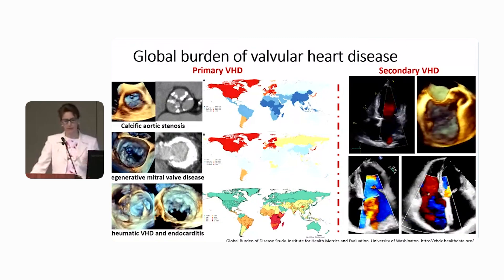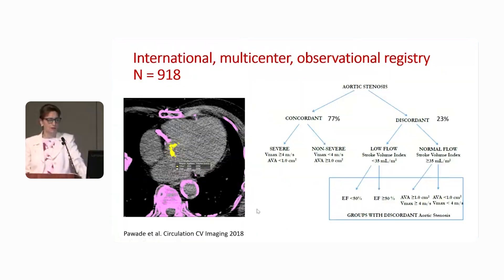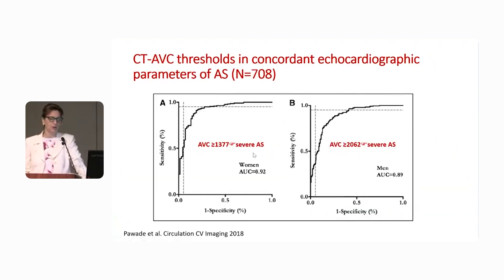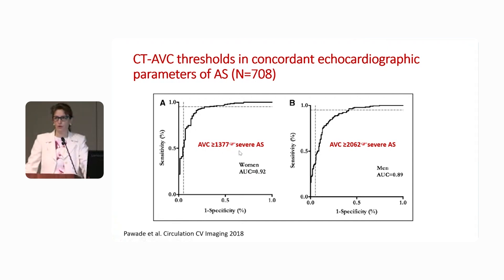These are very heterogeneous patients. In an international multi-center registry with almost 1,000 patients, 23 percent had discordant grading — those with low flow and low gradient, or normal flow and low gradient — and the study proposed best cut-off values to define severe aortic stenosis for men and women.